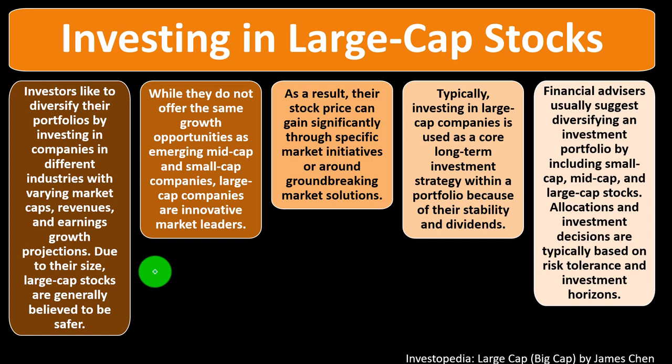Financial advisors usually suggest diversifying a portfolio by including small cap, mid cap, and large cap stocks. Allocations are typically based on risk tolerance and investment horizons. Generally, if you have a longer investment horizon — like saving for retirement — you might weight more toward small cap and mid cap, as their volatility should play out over time. If you have a shorter horizon approaching retirement, you'll want more large cap. In retirement, you almost certainly want more large cap to avoid volatility, and if you're living on dividends, large cap is where those are paid.